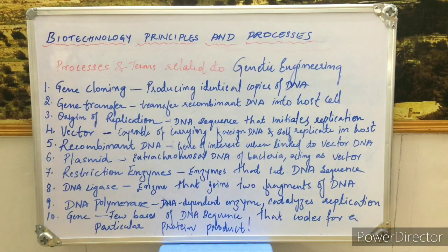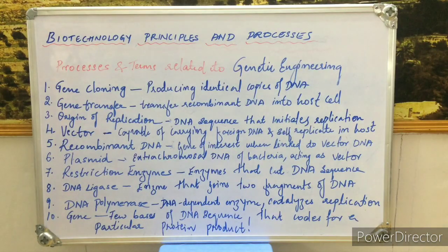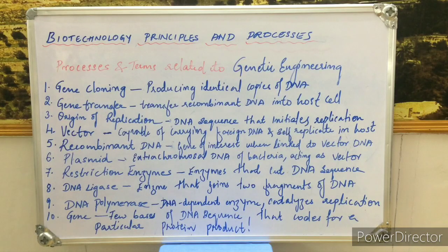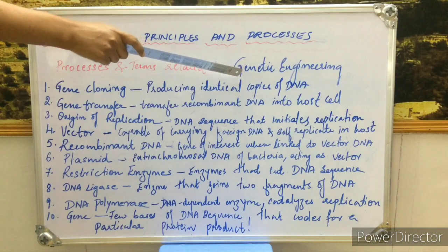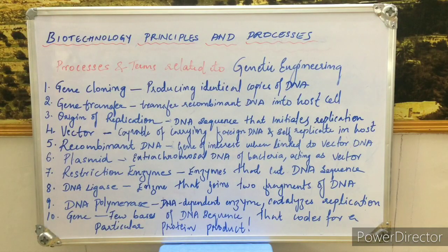The major principles of biotechnology are two techniques on the basis of which biotechnology produces different products. These techniques are genetic engineering and maintenance of sterile ambience. For human use, multiple products are being produced in large amounts through the technique of genetic engineering.